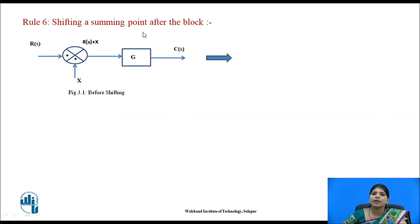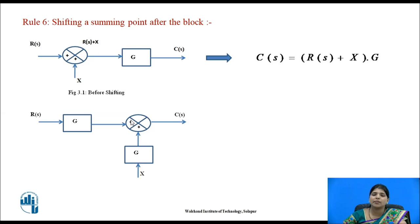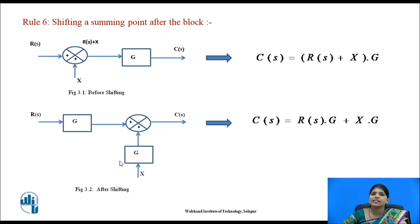Rule six: shifting a summing point after the block. The summing point is shifted after the block. Before shifting, calculate the output: R(s) + X is given to the block, giving G·(R(s) + X). After shifting the summing point, X is multiplied by the same transfer function G and then added at the summing point, giving R(s)·G + X·G. This yields the same output after simplification. When shifting a summing point after the block, multiply the added signal by the same transfer function G.